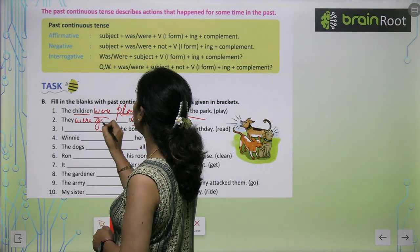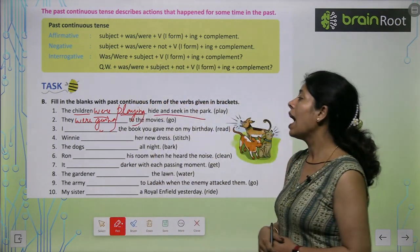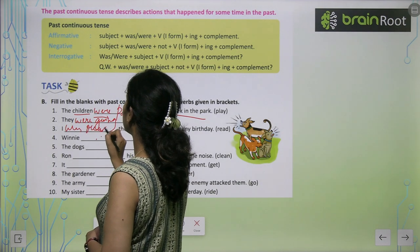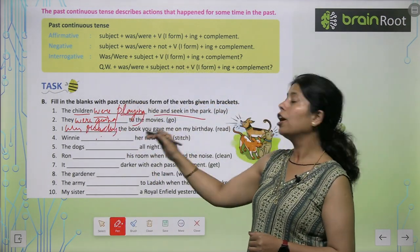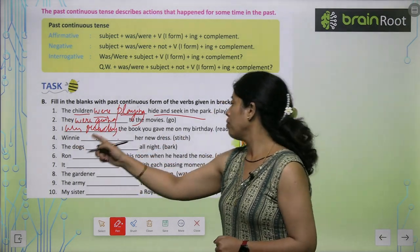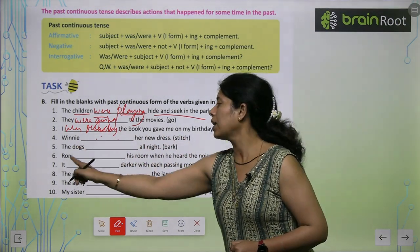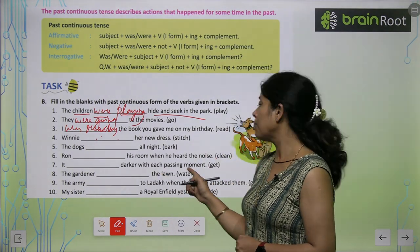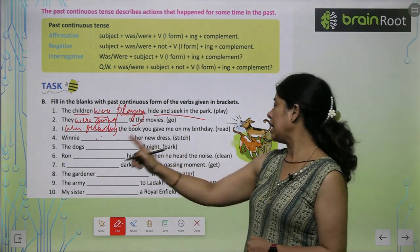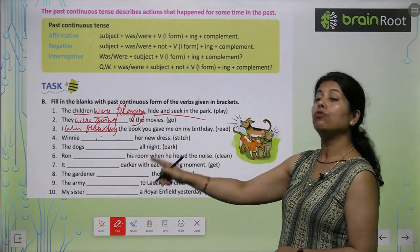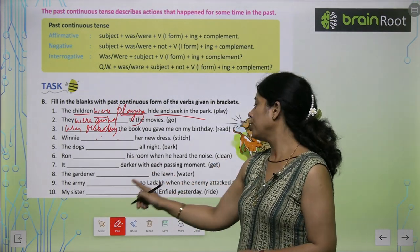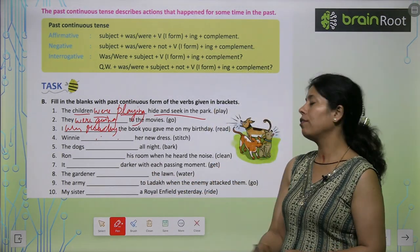Past continuous examples: 'They were going to the movie.' 'I was reading the book you gave me on my birthday.' 'Winnie was wearing her new dress.' 'The dogs were barking all night.' 'Ron was cleaning his room.' 'It was getting darker.' 'The gardener was watching the lawn.' 'The army were going to Ladakh.' 'My sister was writing a royal article yesterday.'